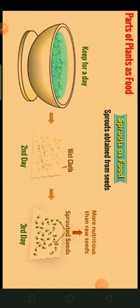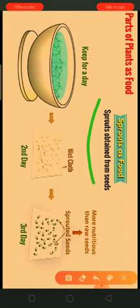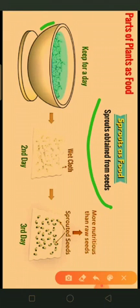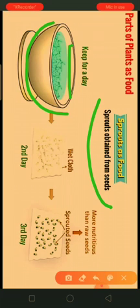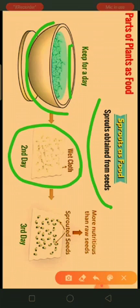Sprouts are also a part of food. These sprouts are obtained from seeds. Take a big wide vessel, fill it with water, and soak the seeds in it. The seeds get swollen by the next day. Keep them for a day, then on the second day put these seeds on a wet cloth and cover it tightly.